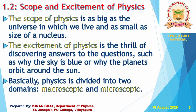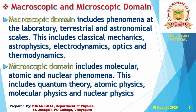Basically physics is divided into two domains: macroscopic and microscopic. Those dealing with bulk quantities are macroscopic, and smaller quantities are under microscopic. Macroscopic domain includes phenomena at the laboratory, terrestrial, and astronomical scales — that means the bigger things. This includes classical mechanics, astrophysics, electrodynamics, optics, and thermodynamics. These are all branches of physics that come under the macroscopic domain.